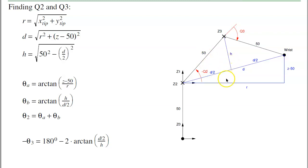I can find the angles. This is theta a, this angle right in here. That's just the arctangent of z minus 50 over r. This angle right here, theta b, is the arctangent of h over d over 2.